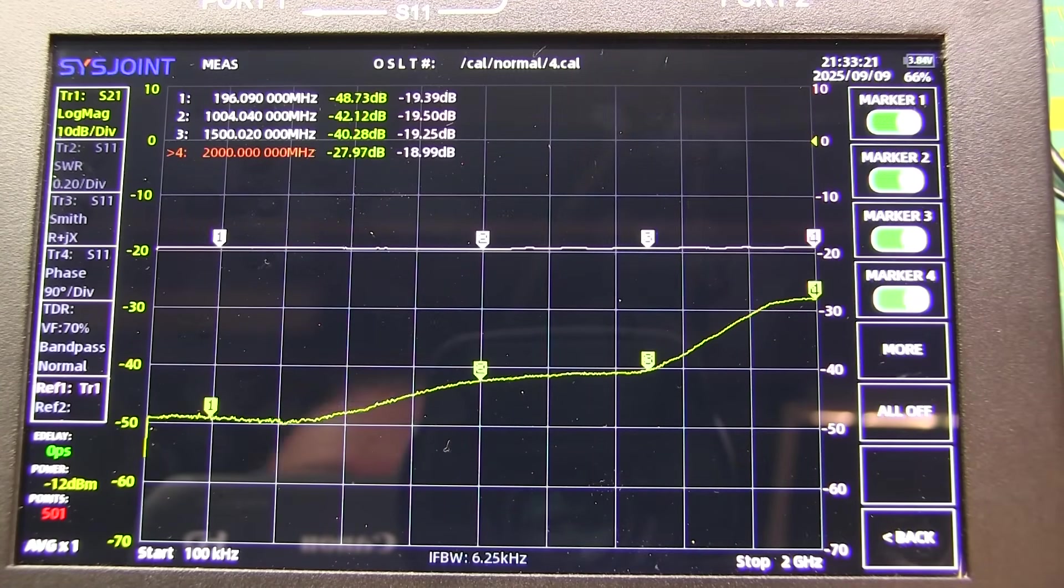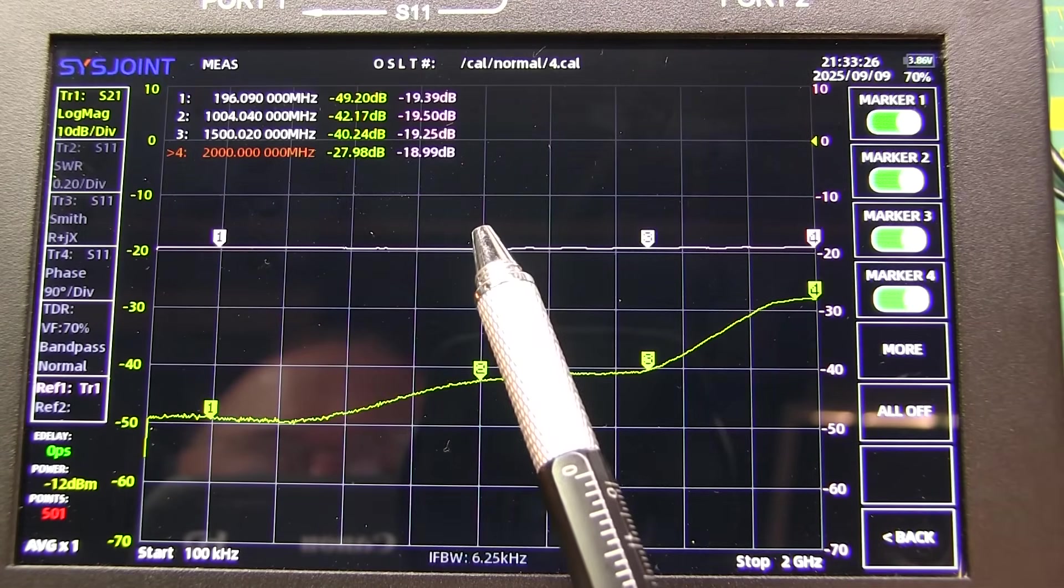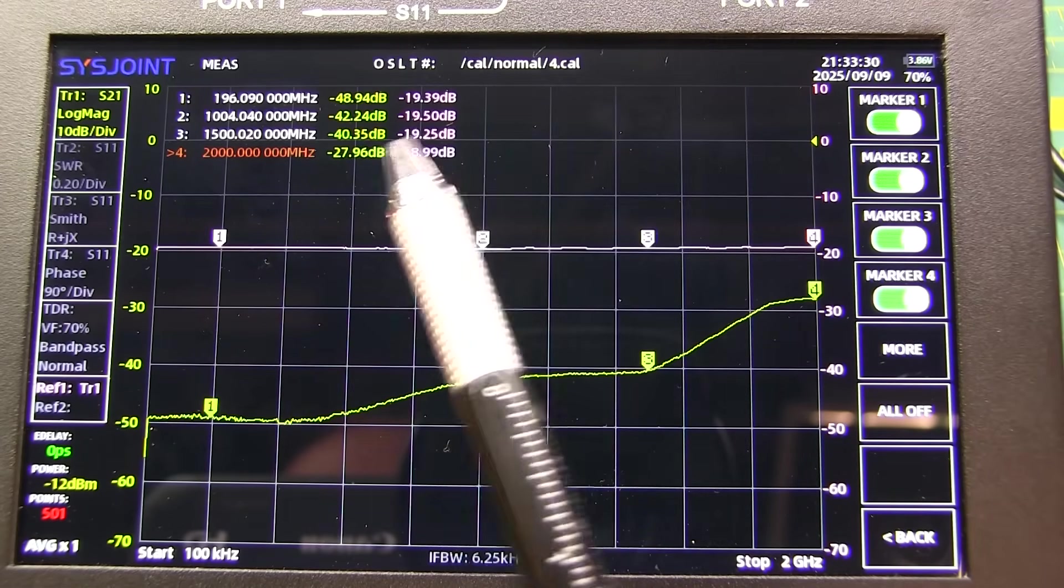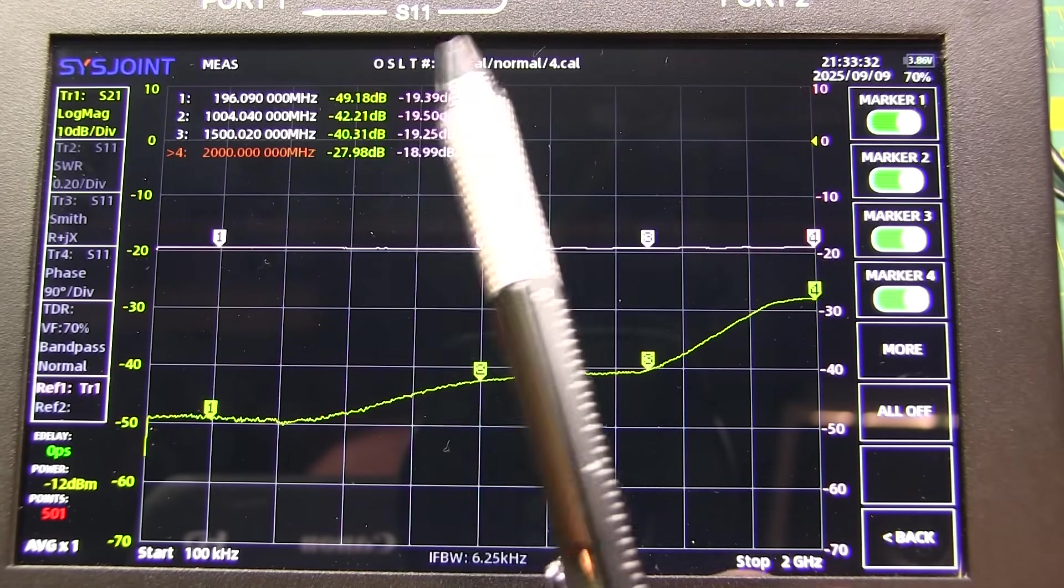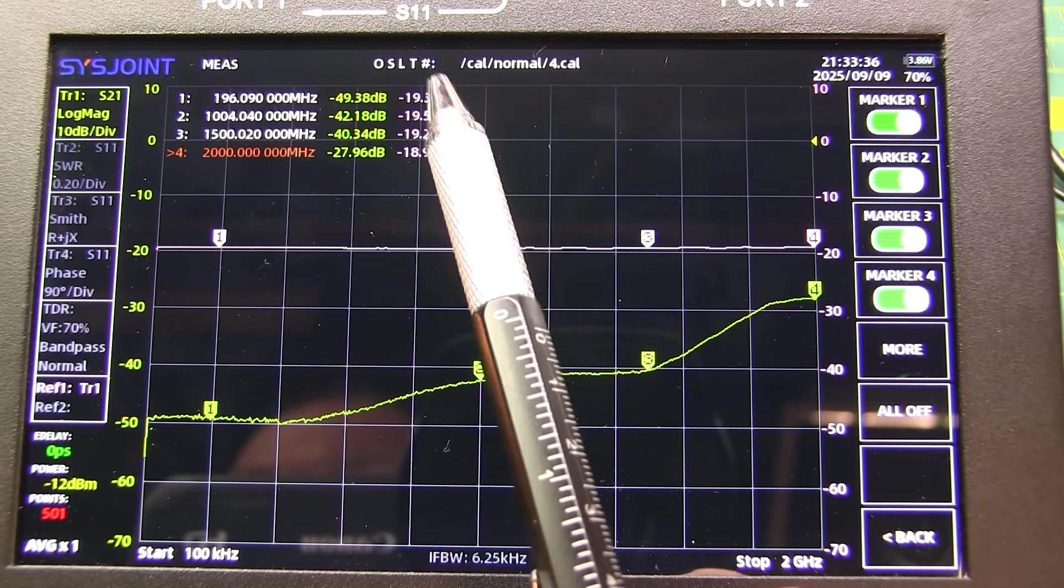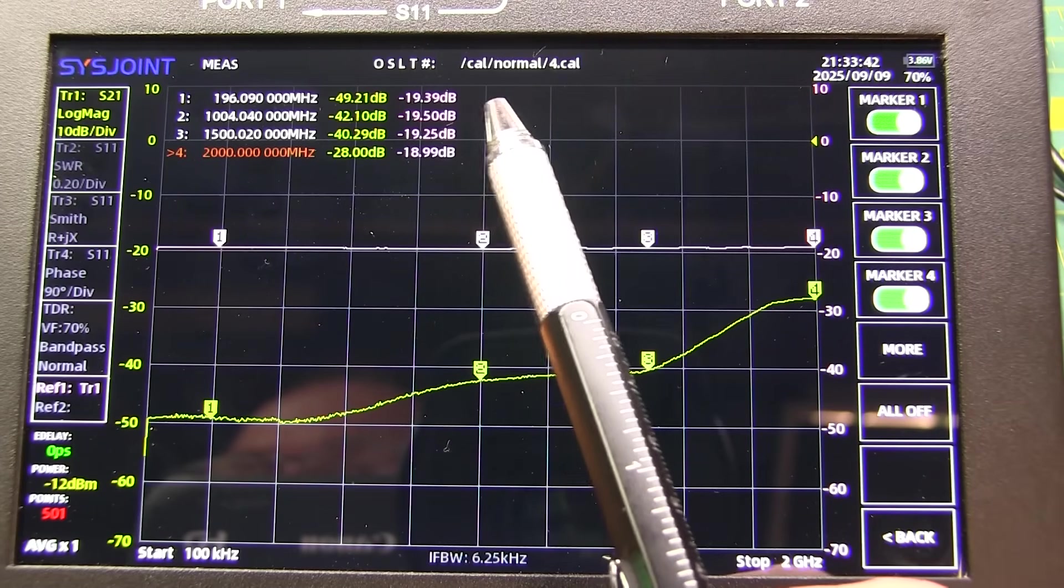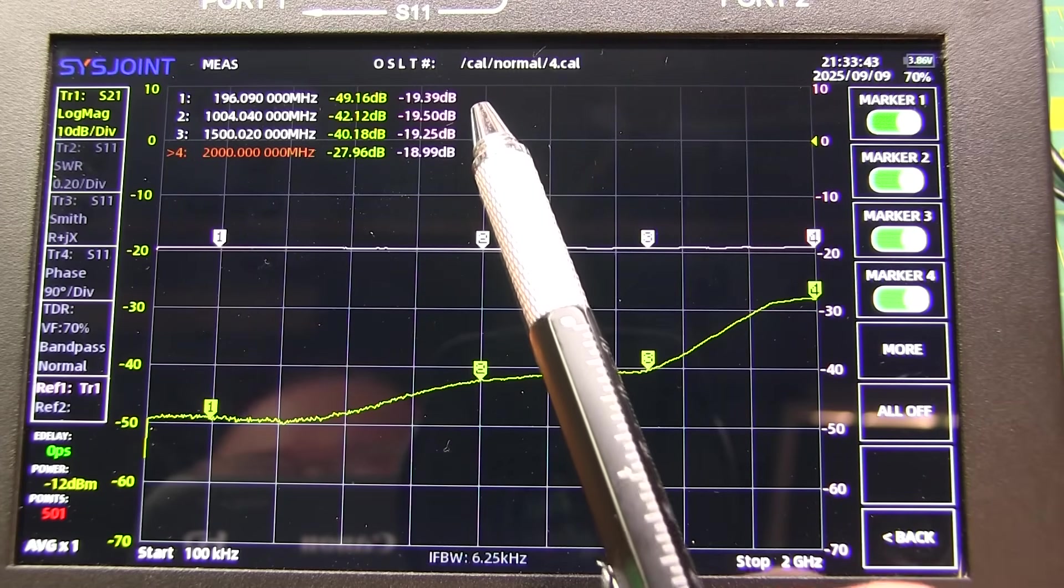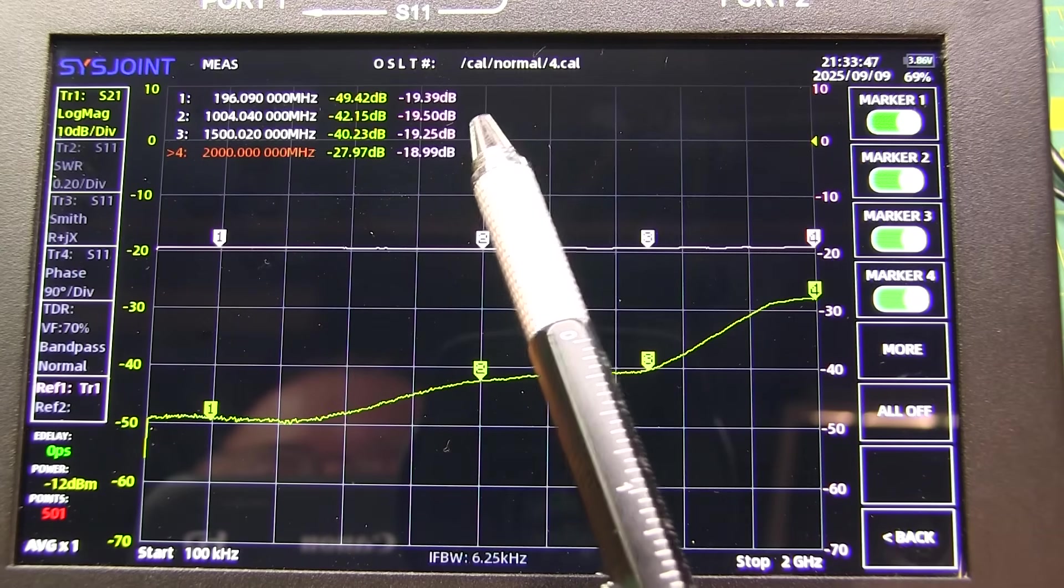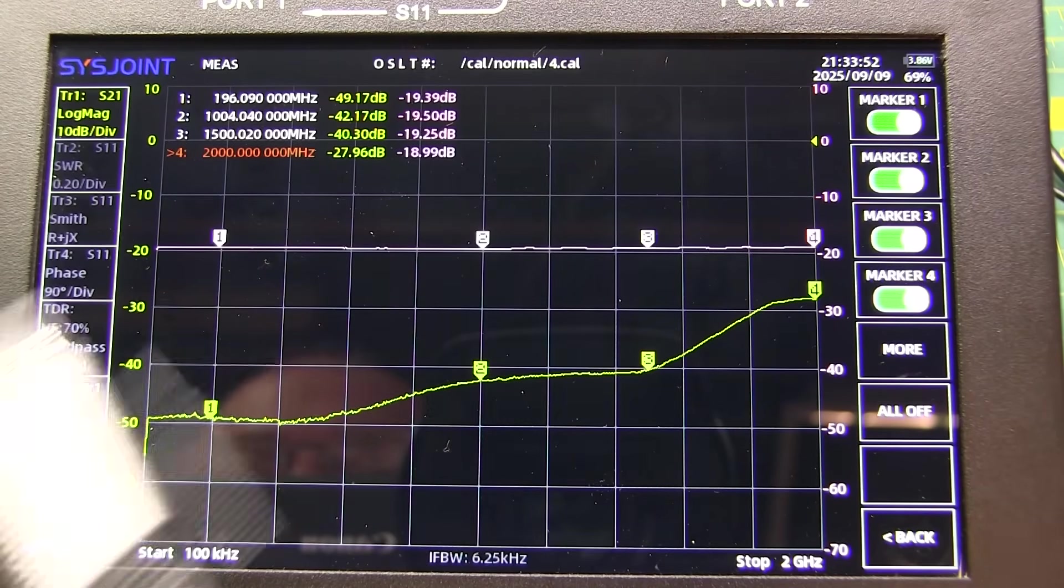All right, so I went through and just added a couple of markers, one at about 200 megahertz, one at about 1 gig, 1.5 gig, and 2 gig, and showing both values. And if we just mentally do the difference between those two to give us directivity, we're looking at about 29.8 dB or so for 200 meg. We're looking at about 22.7 dB or so at 1 gig, about 20.9 dB at 1.5 gig, and about 9 dB or so at 2 gigahertz.